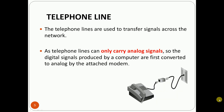The next requirement is the telephone line. Telephone lines are used to transfer signals across the network. Since telephone lines can carry only analog signals, the digital signals produced by the computer are first converted into analog by the attached modem.